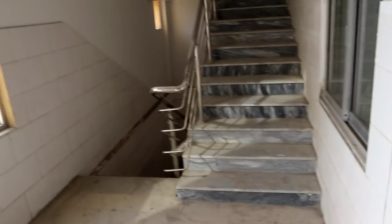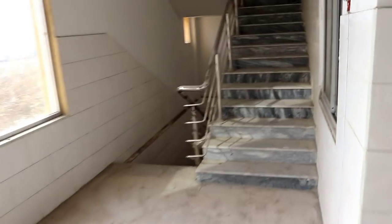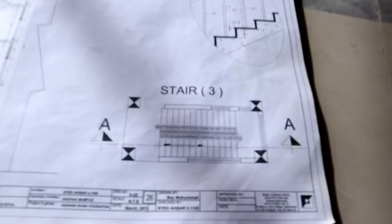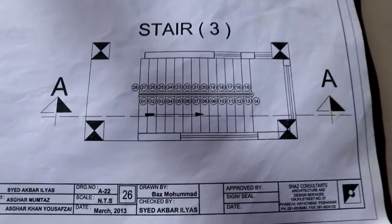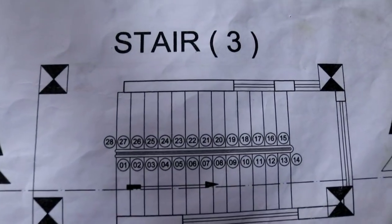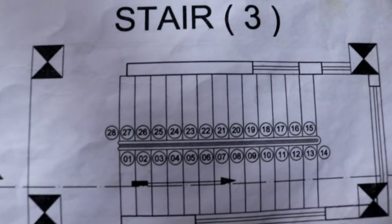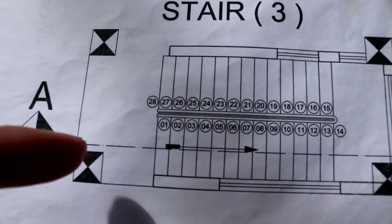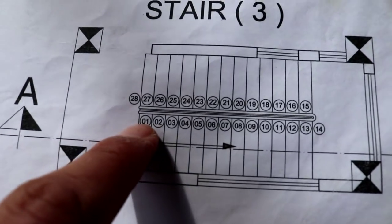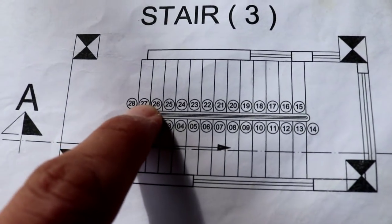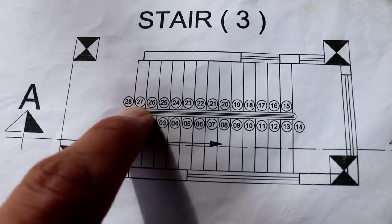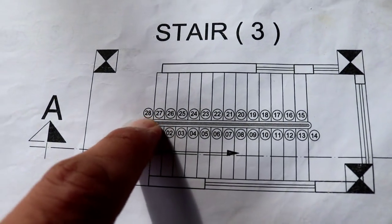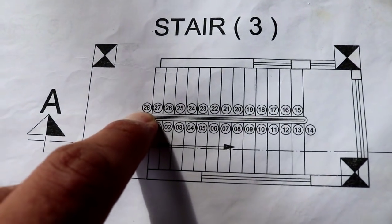The total number of treads is shown here — you can see it goes from 1 to 27, and the 28th step is the floor level.